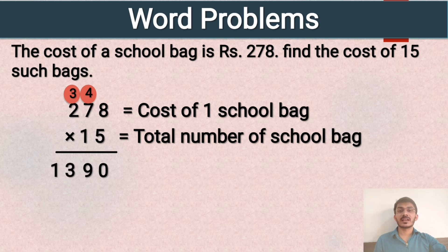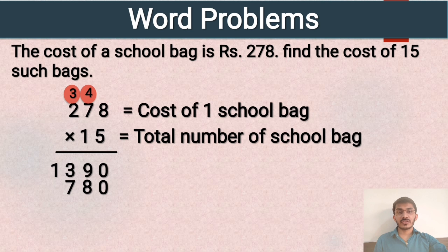Now we multiply 278 by 1. The place value of 1 is 10, so we write 0 at the ones place. 1 times 8 is 8, 1 times 7 is 7, and 1 times 2 is 2. Now we add the numbers 1390 and 2780. 0 plus 0 is 0.